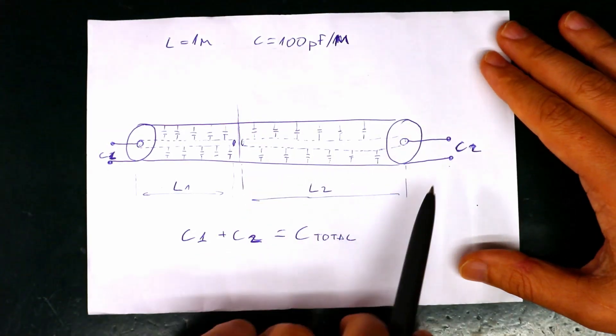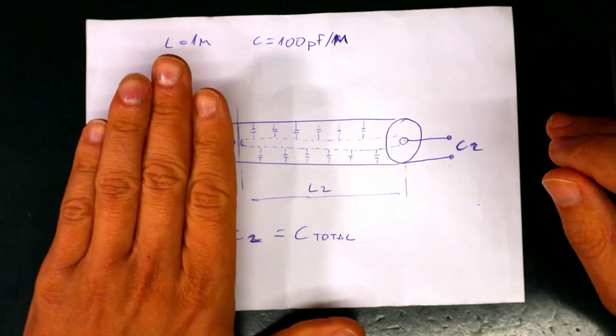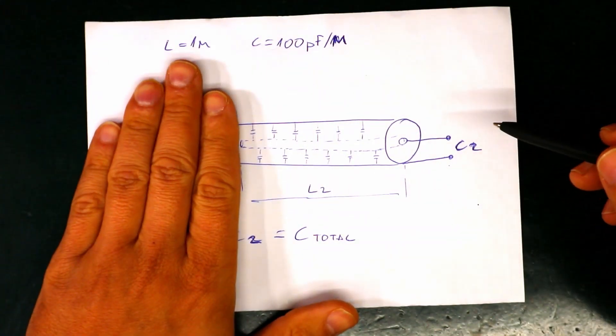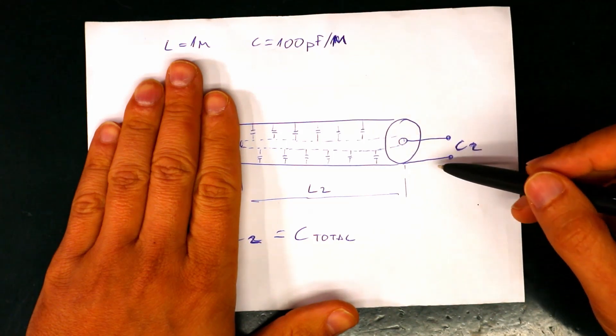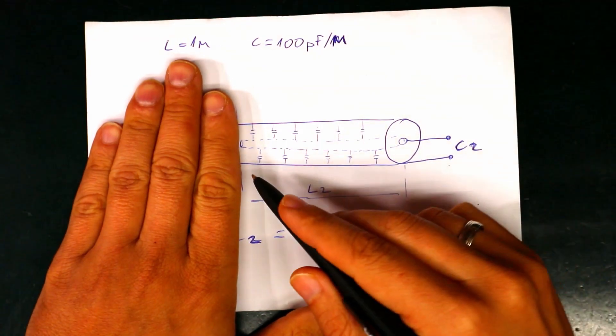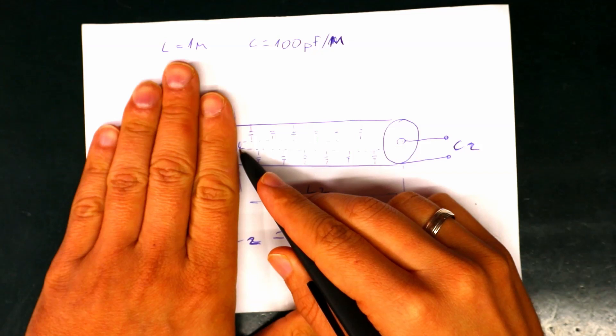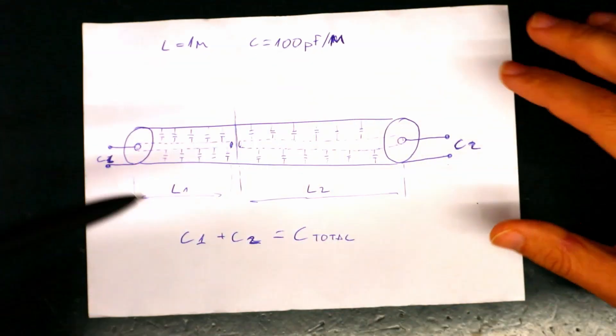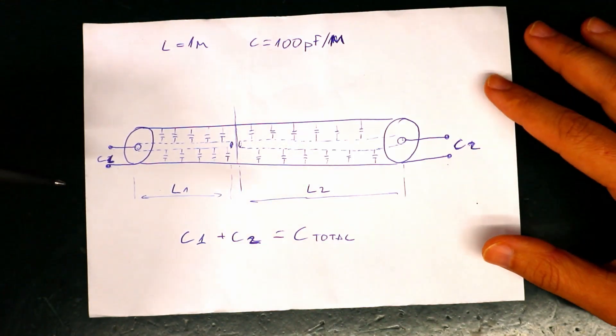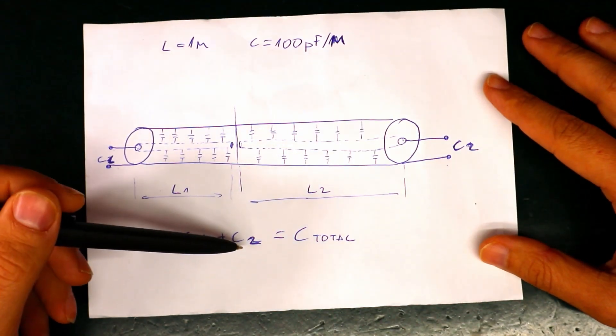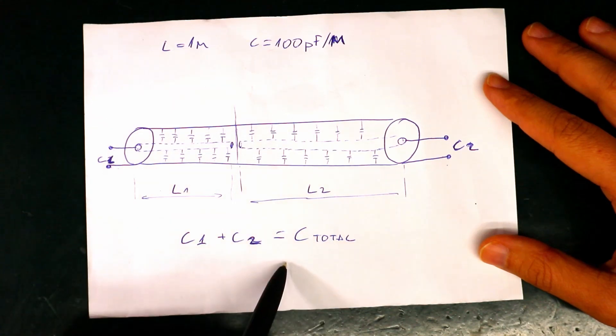We could do the same from the other side and now we are reading the capacitance from this end from this signal wire up to the open circuit here and in this case we could say that C1 plus C2 gives the total capacitance of this cable.